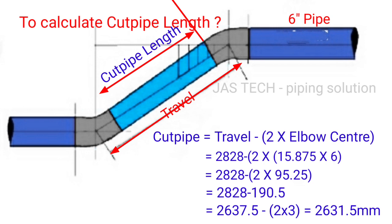Minus 2 times elbow center. This 45 degree elbow center, we know the formula is 15.875 times our sample pipe 6 inch. So 15.875 times 6 inch equals 95.25. So 2 times 95.25 equals 190.5 mm.